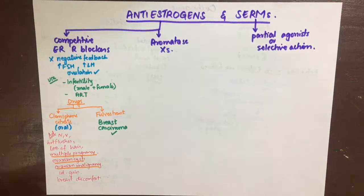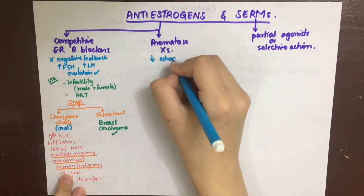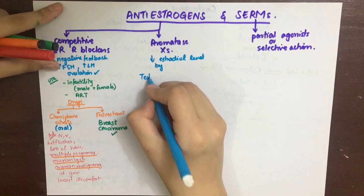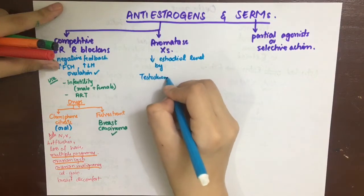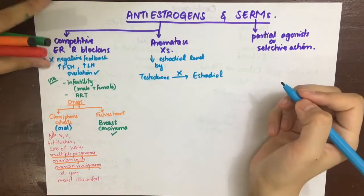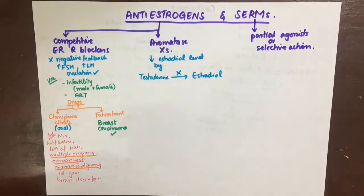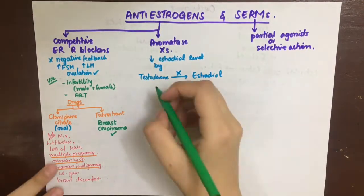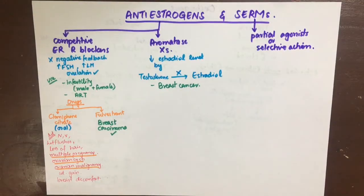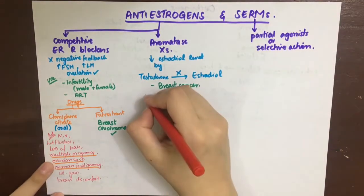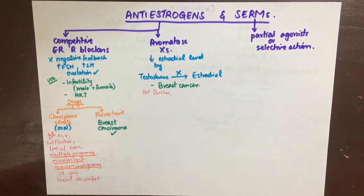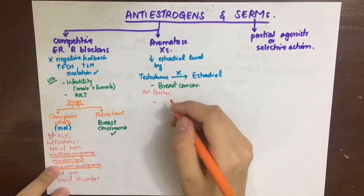Aromatase inhibitors decrease the estrogen level by inhibiting aromatase. Naturally, their use will be in breast cancer to decrease estrogen levels. The side effects include hot flushes. The drugs are letrozole, anastrozole, and exemestane.